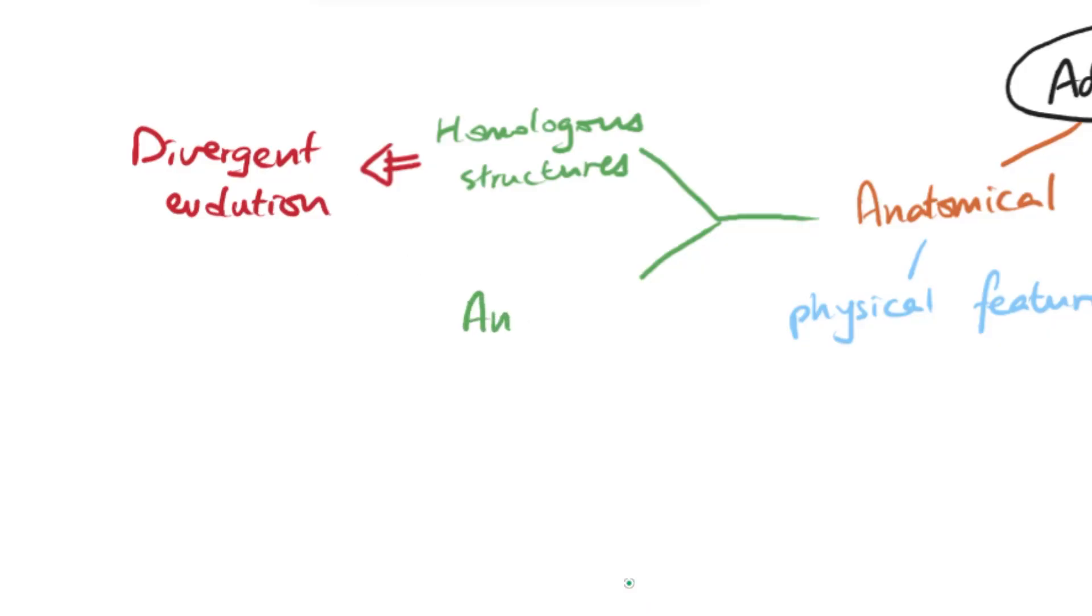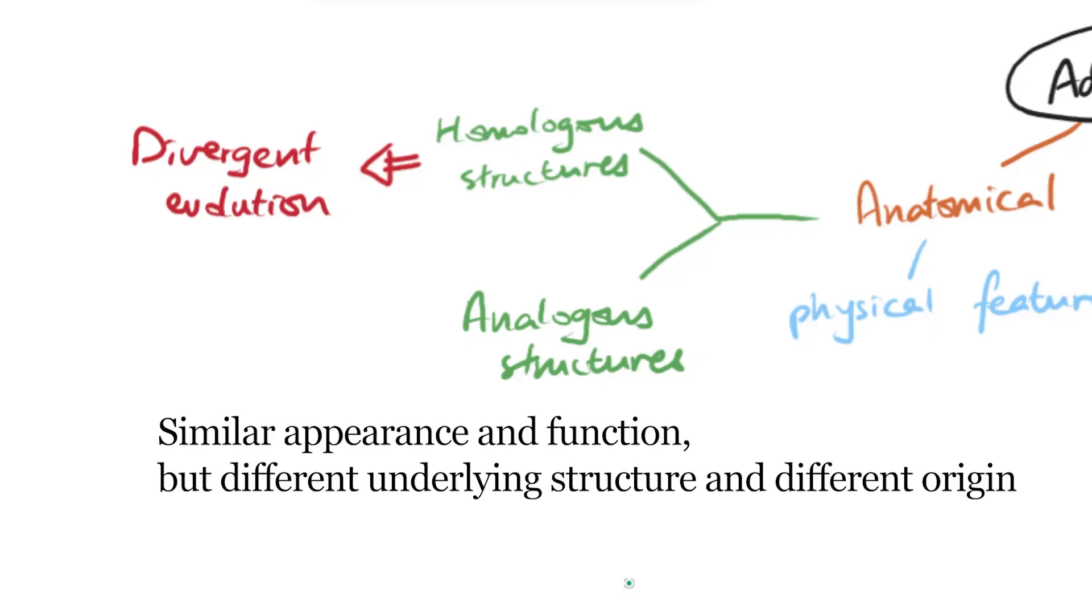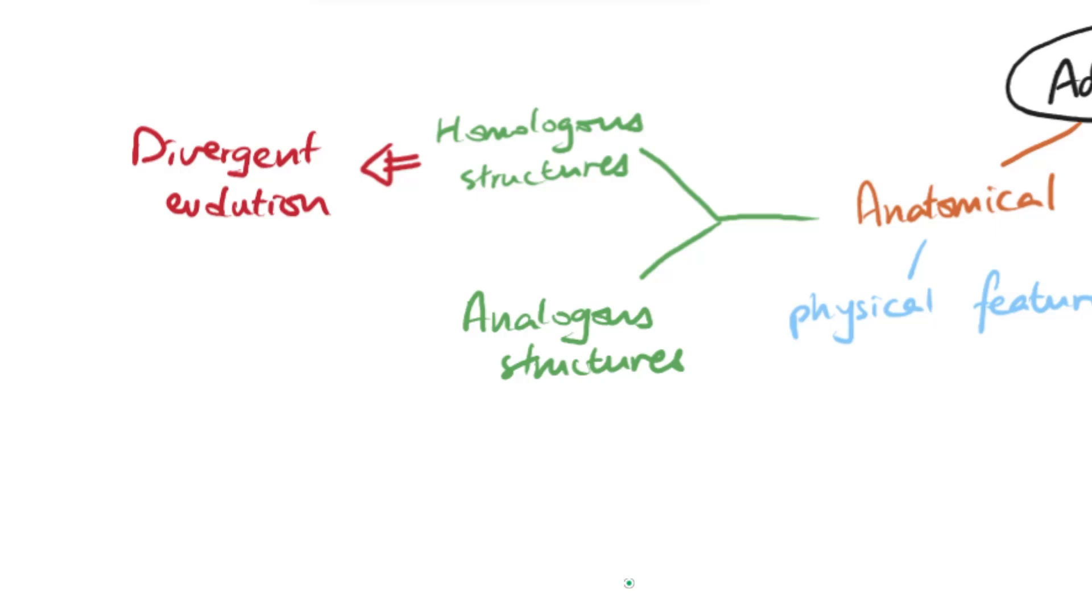On the other hand we can also have something called analogous structures. Analogous structures are pretty much the opposite to homologous structures. Analogous structures are structures that have the same function and they appear similar but have very different underlying structures. A classic example would be thinking about a dolphin and a shark. If you look at a dolphin and a shark they look quite similar - they have the same flippers for example. The reason for that is because they both live in the ocean so they must have very similar adaptations to allow them to survive in their environment.